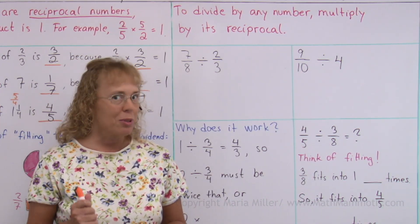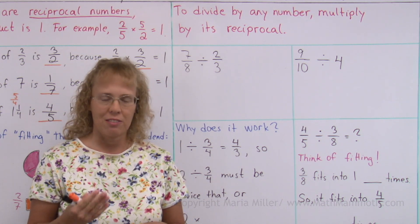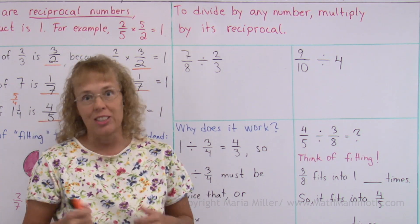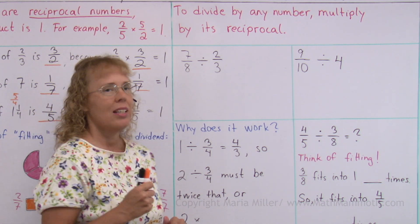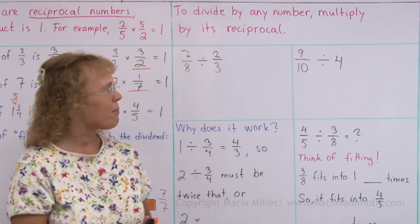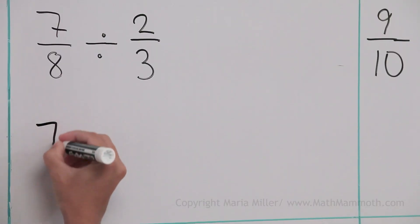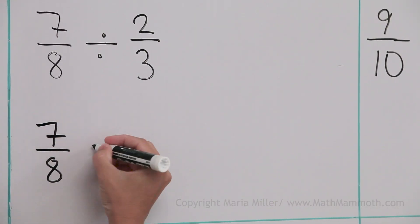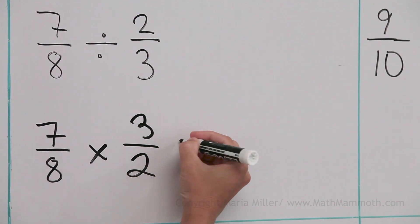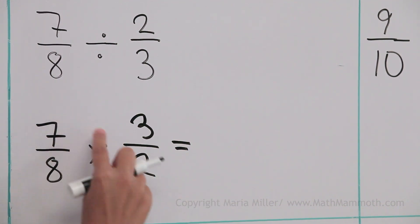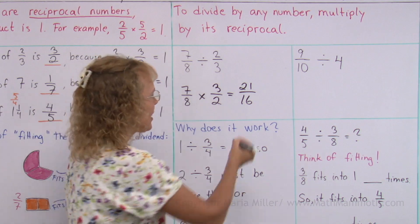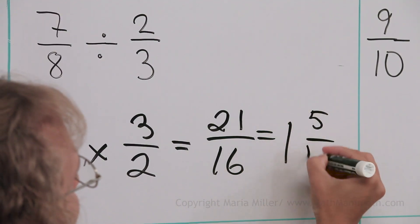Now that we have studied reciprocal numbers, we can go back to the shortcut for fraction division. To divide by any number — for example, to divide by a fraction — multiply by its reciprocal. This means we will change every division problem into a multiplication problem. I will write 7 eighths — it won't change. The division changes into a multiplication, and then I take this number's reciprocal and flip it. Now we just multiply normally: 7 times 3 is 21, the denominator is 16. Lastly, write it as a mixed number: 1 whole and 5 sixteenths.